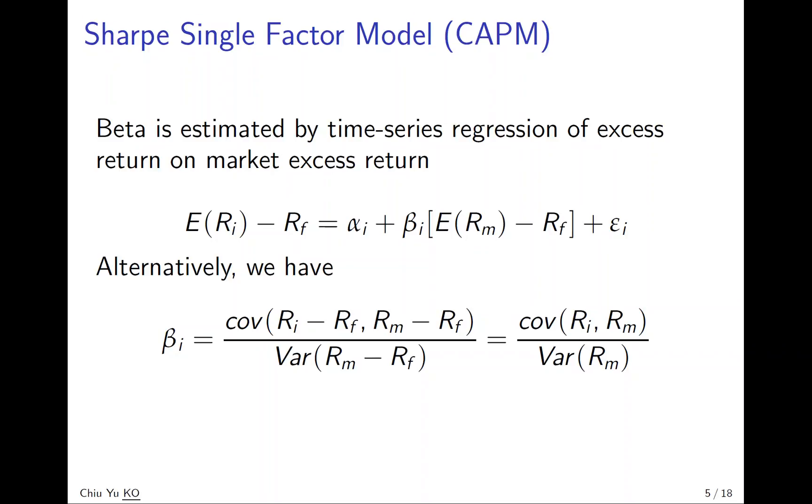Since this is a simple linear regression, beta i can also be found by covariance over variance formula. The denominator is the variance of market excess return. The numerator is covariance of stock i excess return with the market excess return.